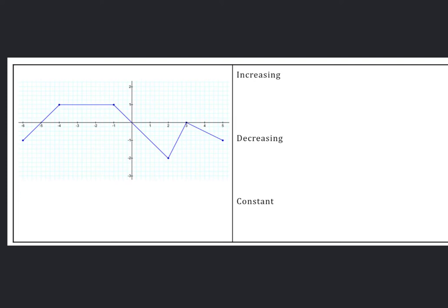Today's lesson is on graph behavior and average rates of change. Everything in this lesson really is an algebra 1 concept. We're just going to put a little bit of a pre-calculus spin on it.